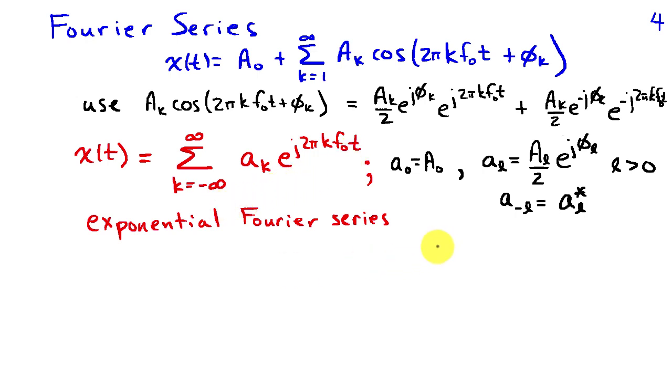For this exponential Fourier series to be equivalent to our Fourier series in terms of the cosines, we're going to need to have lowercase a₀ to be equal to uppercase A₀. And then coefficient a_l will be uppercase A_l divided by 2 times e^(jφ_l), provided l is greater than zero. And the coefficient for negative indices k are obtained by taking the conjugates of those for the positive indices. So this is our exponential Fourier series.